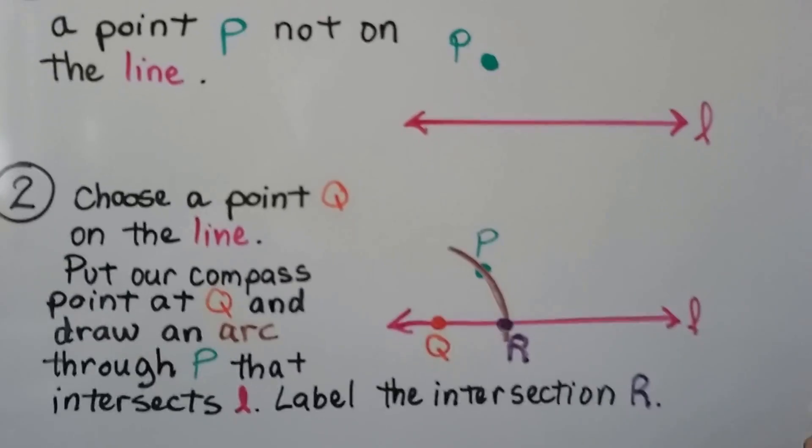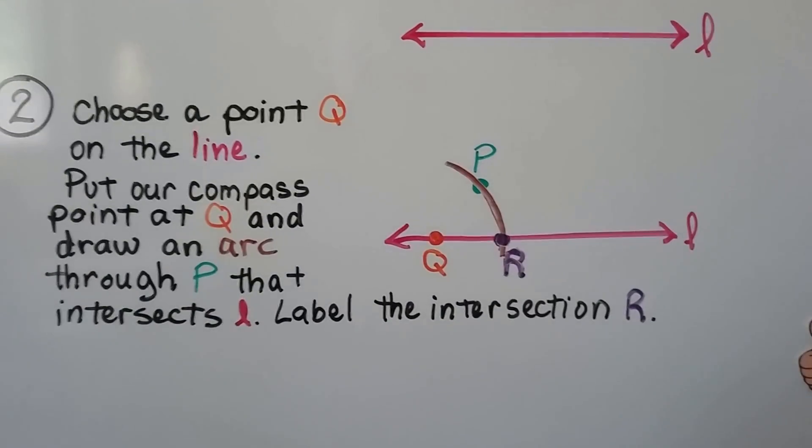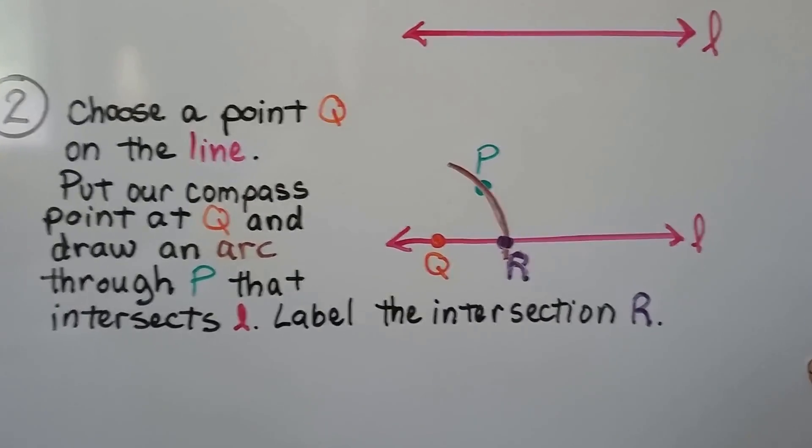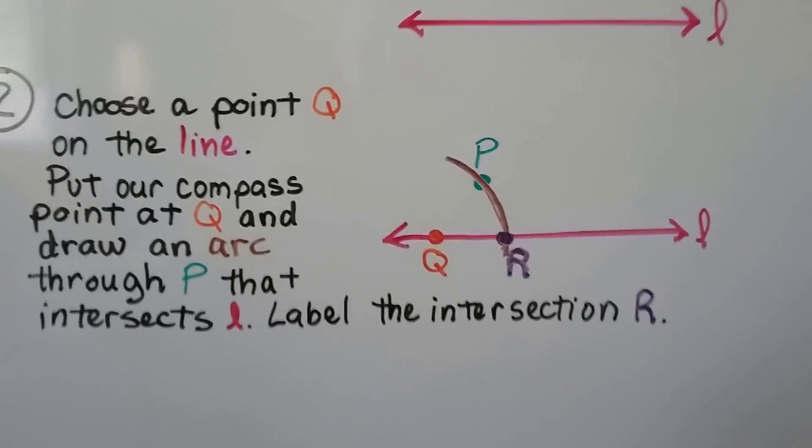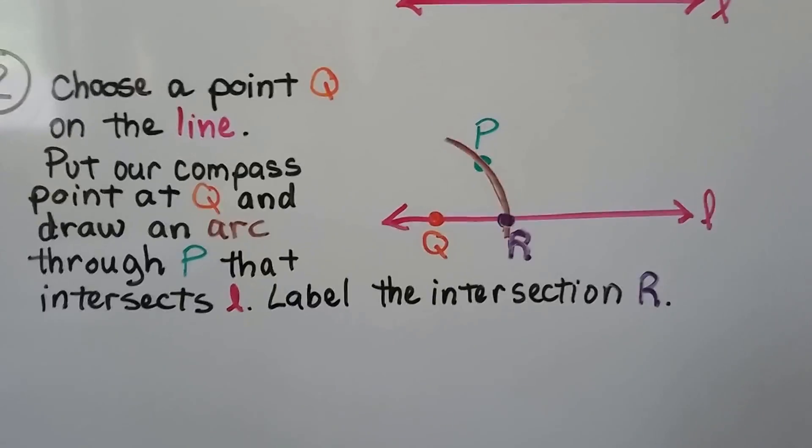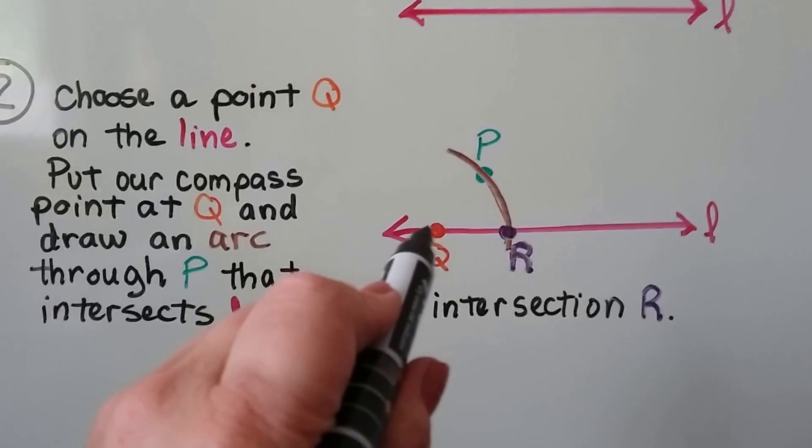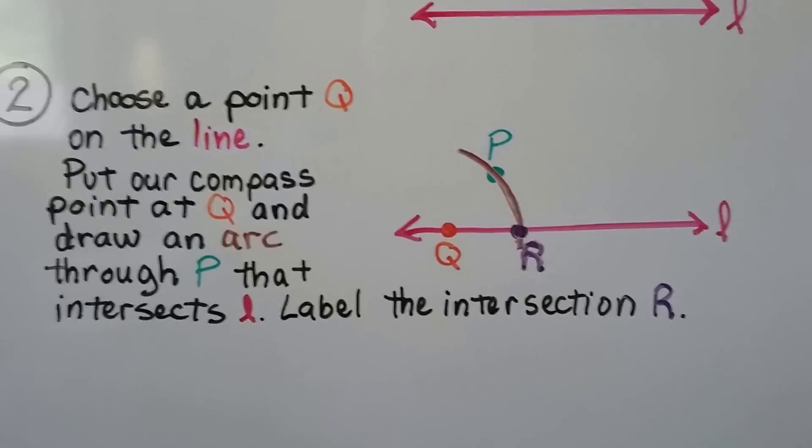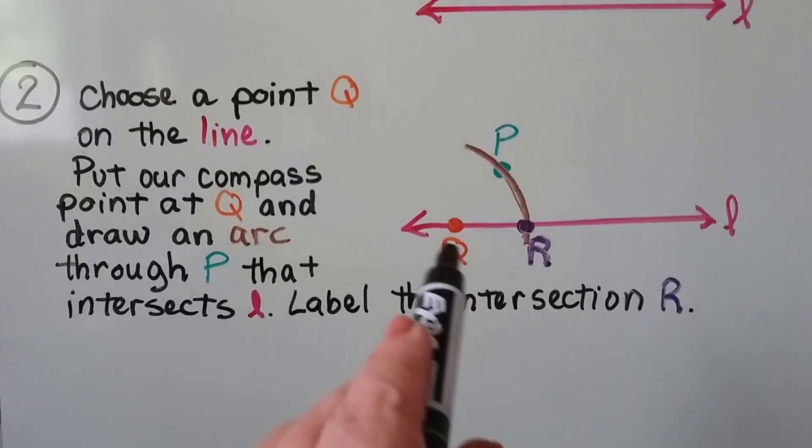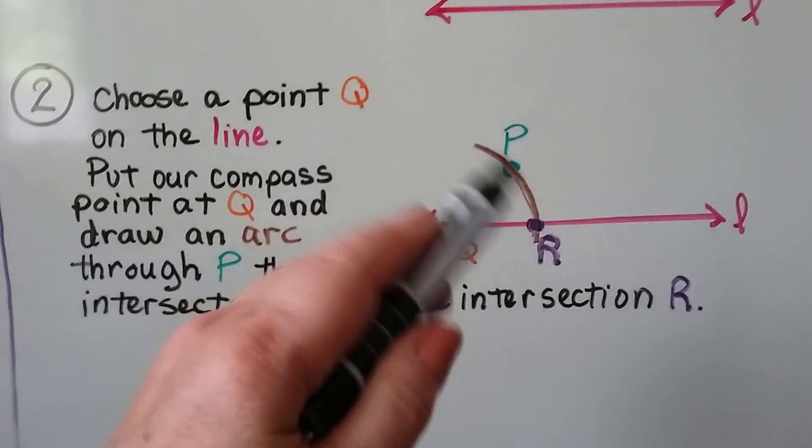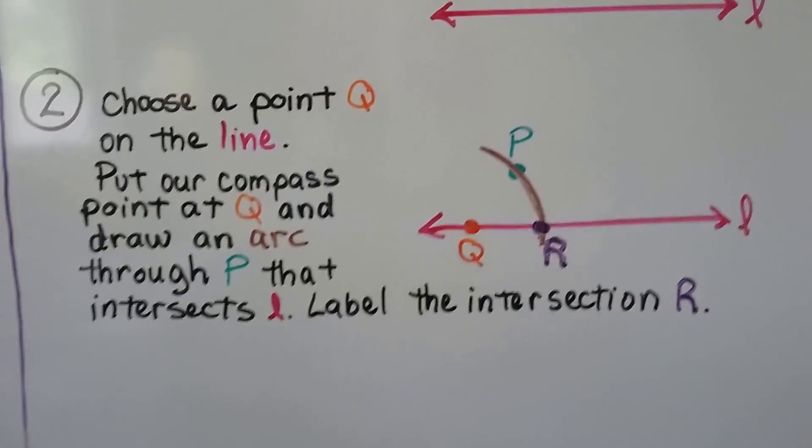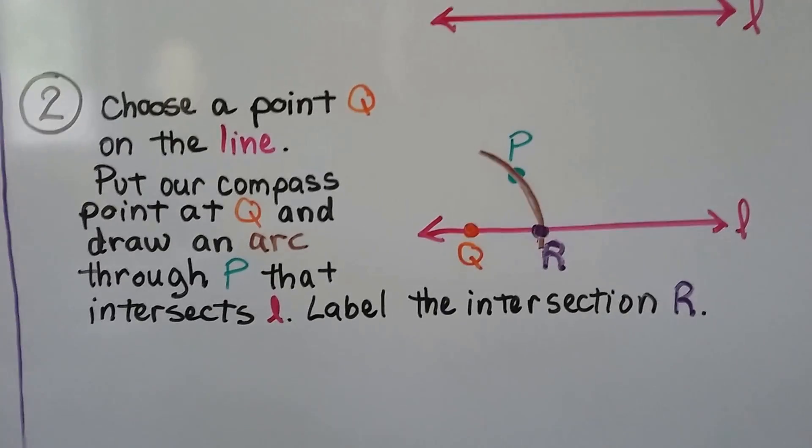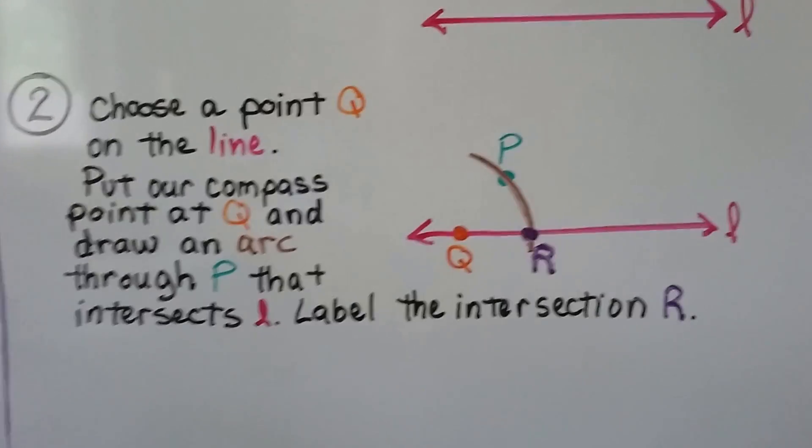The next thing we do is choose a point Q on the line. Putting it to the left and down here to P is helpful to follow along with what I'm doing. We put our compass point at Q and draw an arc through P that intersects L. We label that intersection R.